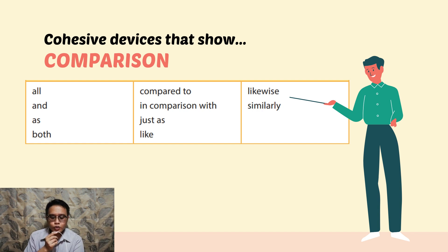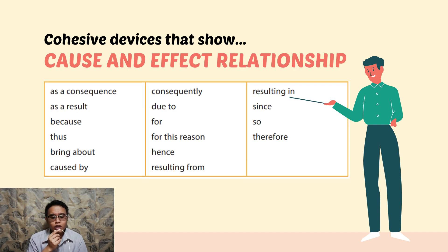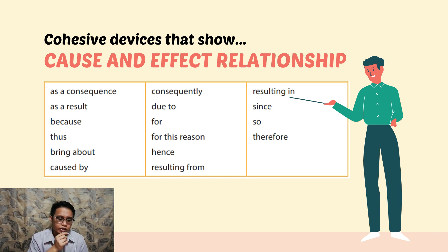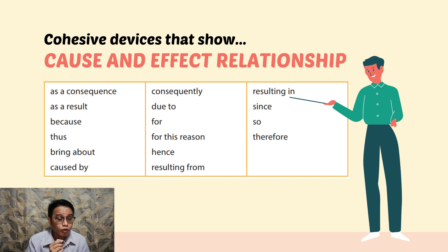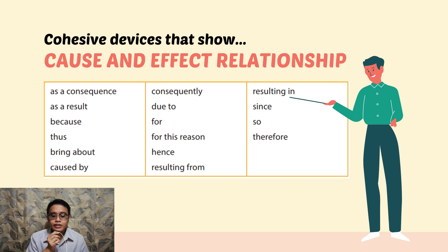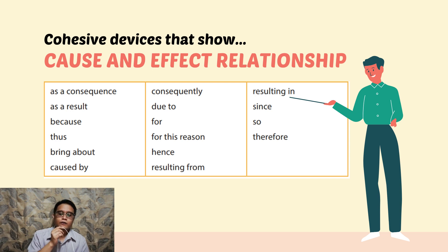Now let's go to cause-and-effect relationships. These cohesive devices show a cause and its effect. They include: as a consequence, as a result, because, thus, bring about, caused by, consequently, due to, for, for this reason, hence, resulting from, resulting in, since, so, and therefore.